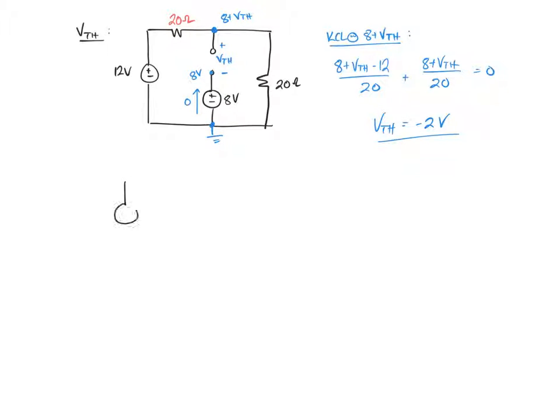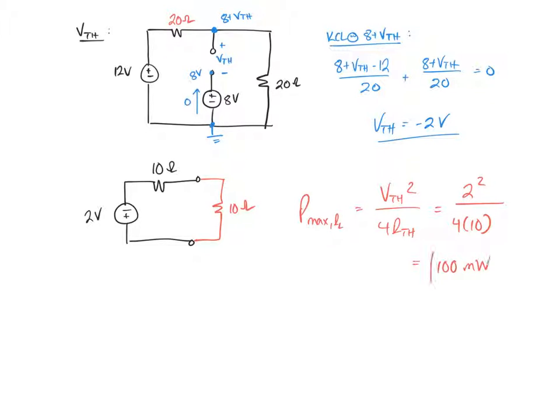So the Thevenin equivalent circuit will be a 2 volt source. I flipped the voltage source upside down since it's negative in series with a 10 ohm resistor. Now this circuit is attached to a load that is 10 ohms, and the maximum power of the load RL is given as VTH squared over 4RTH. So that's 2 squared over 4 times 10, which will result in 100 milliwatts delivered to the load.